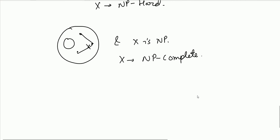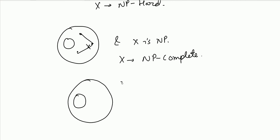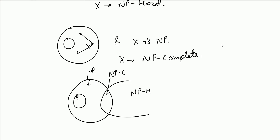We can visualize this in a diagram: the outermost region is NP-Hard, inside that is NP-Complete, then NP, and innermost is P.